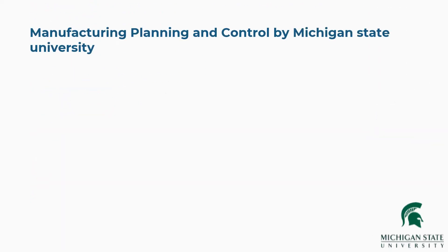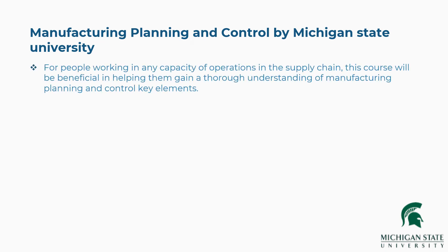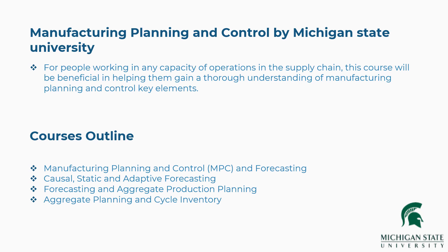Fourth is Manufacturing Planning and Control by Michigan State University. For people working in any capacity of operations in the supply chain, this course will help them gain a thorough understanding of manufacturing planning and control key elements. The concepts covered are: Manufacturing Planning and Control (MPC) and forecasting, causal, static and adaptive forecasting, forecasting and aggregate production planning, aggregate planning and cycle inventory, and more.